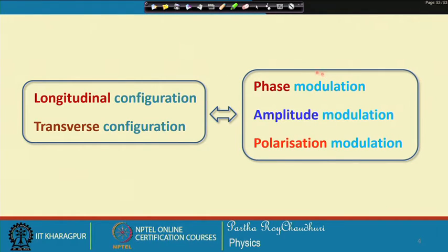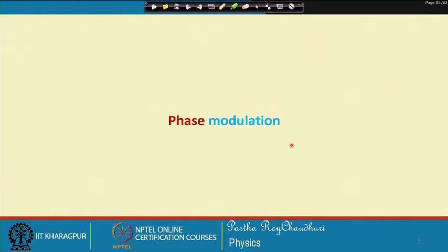These are three very important properties of electromagnetic waves which can be modulated to develop various kinds of measurement instruments, sensors, and several other technologies.